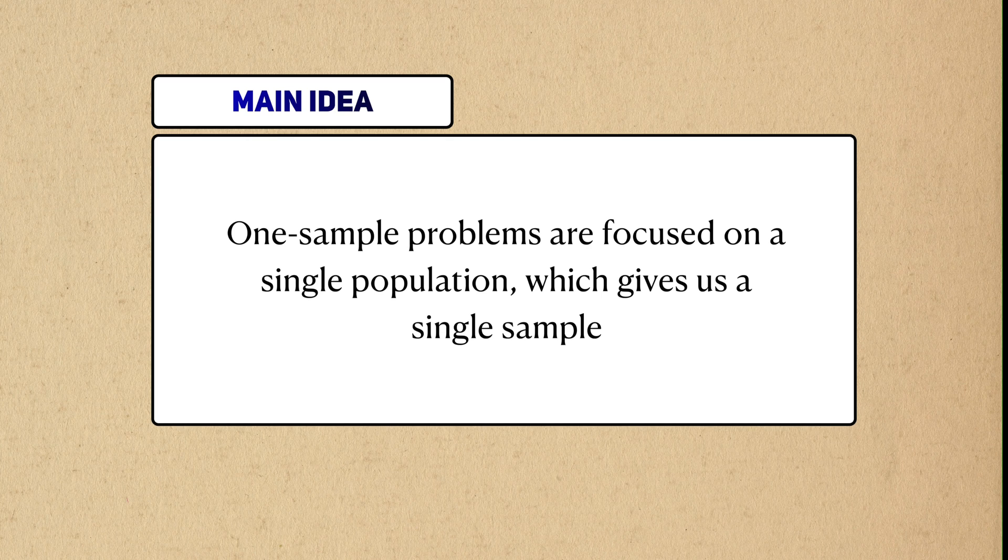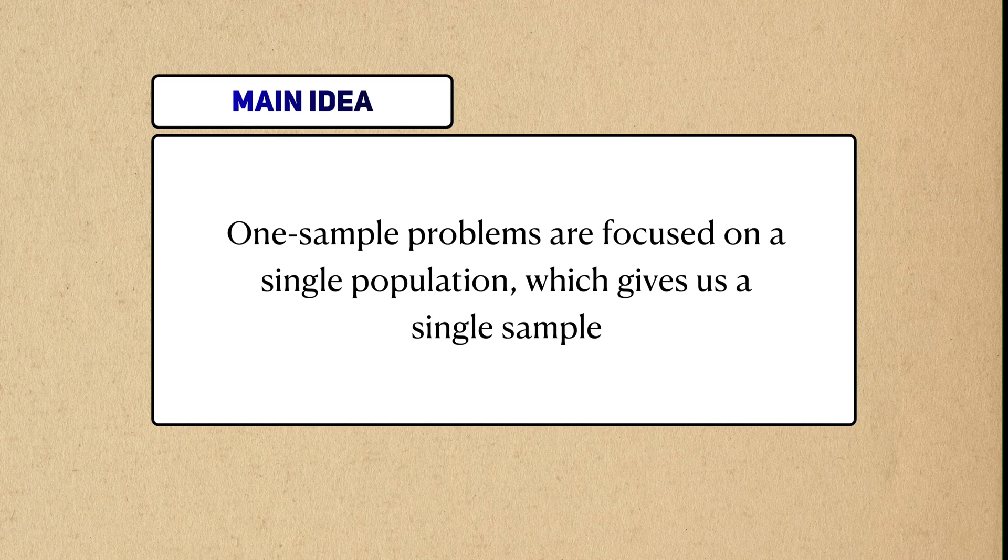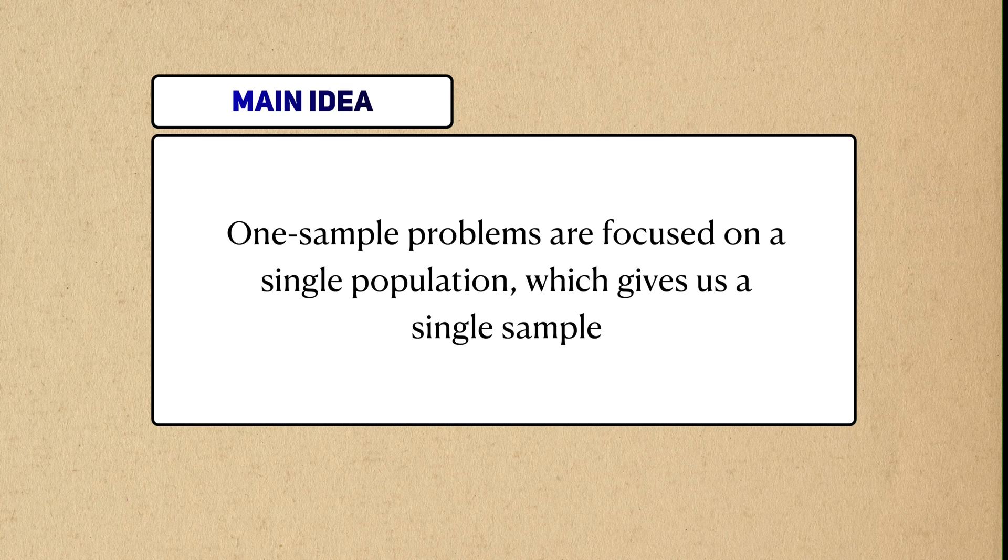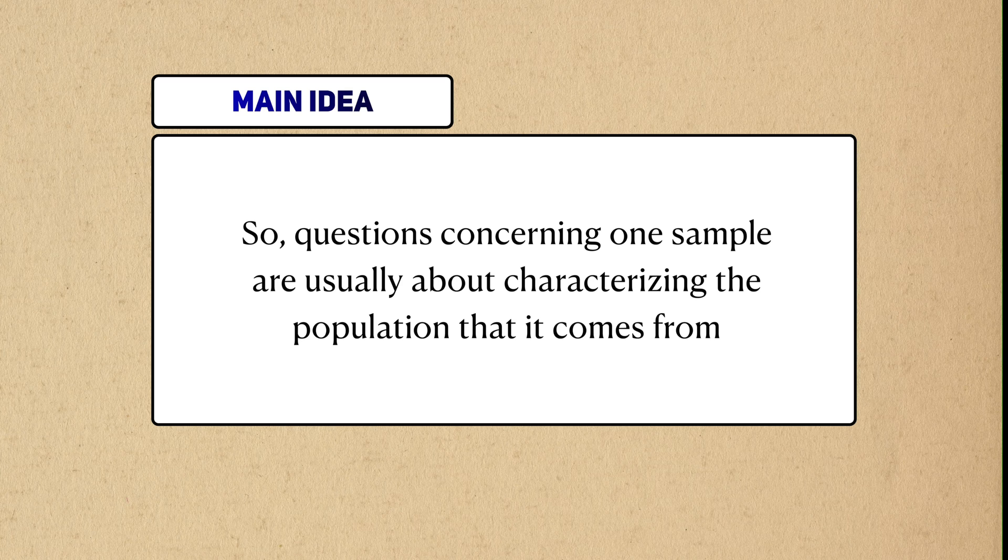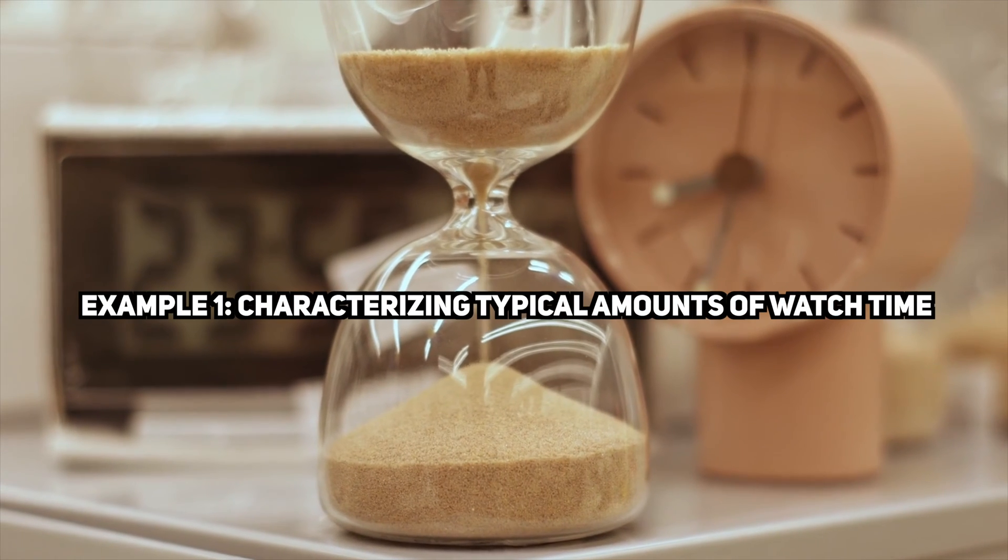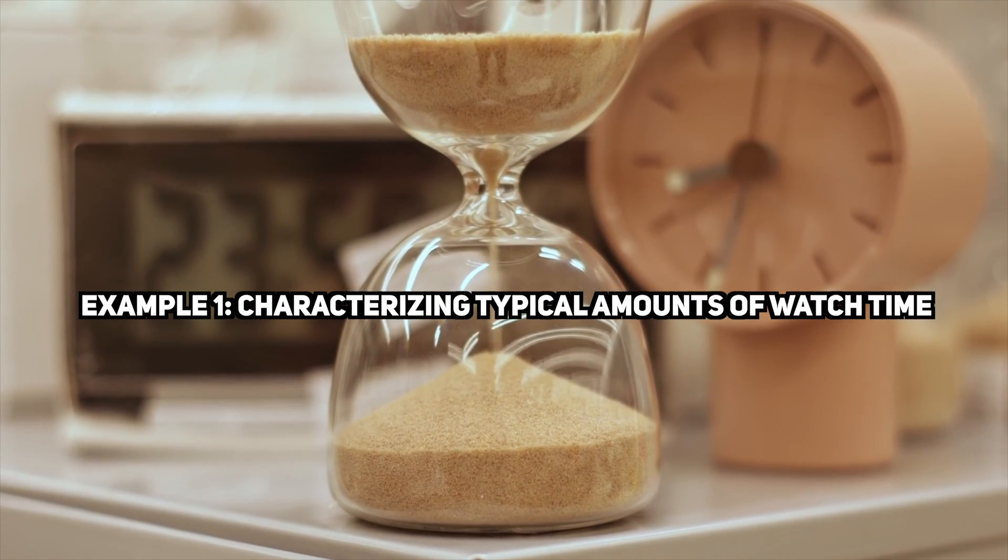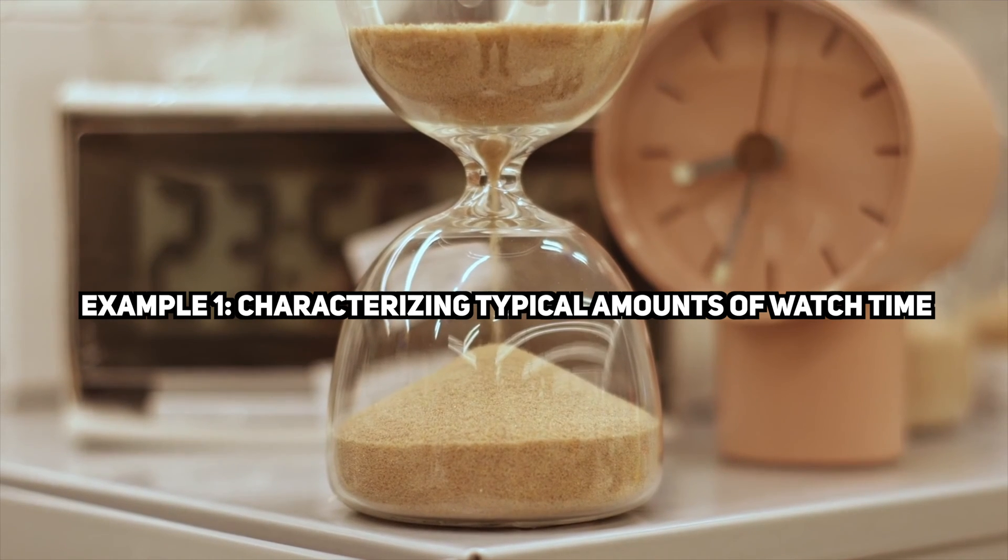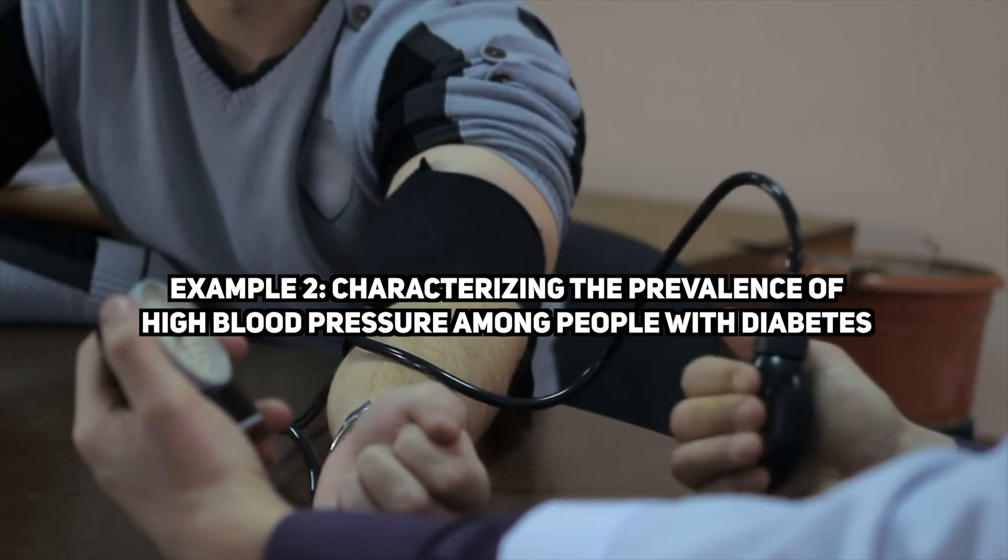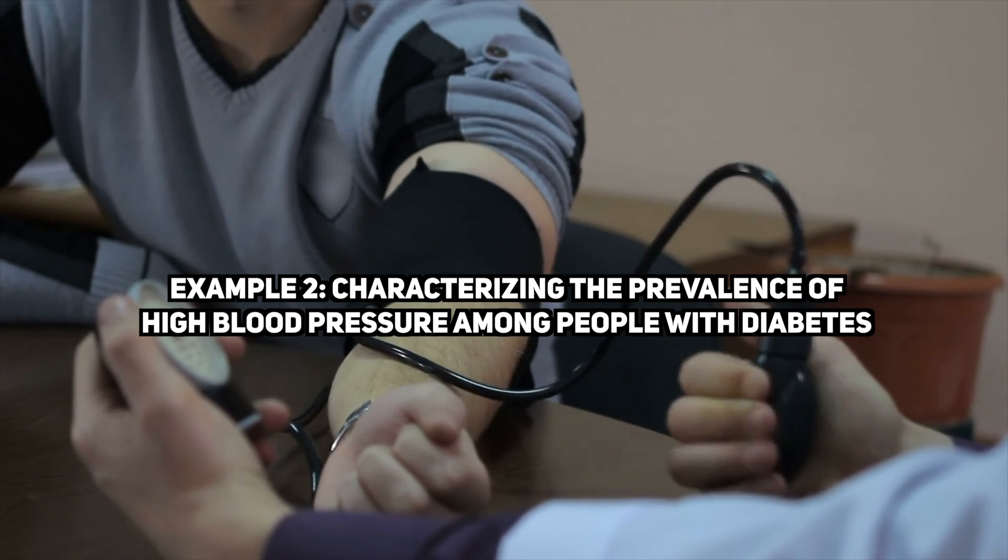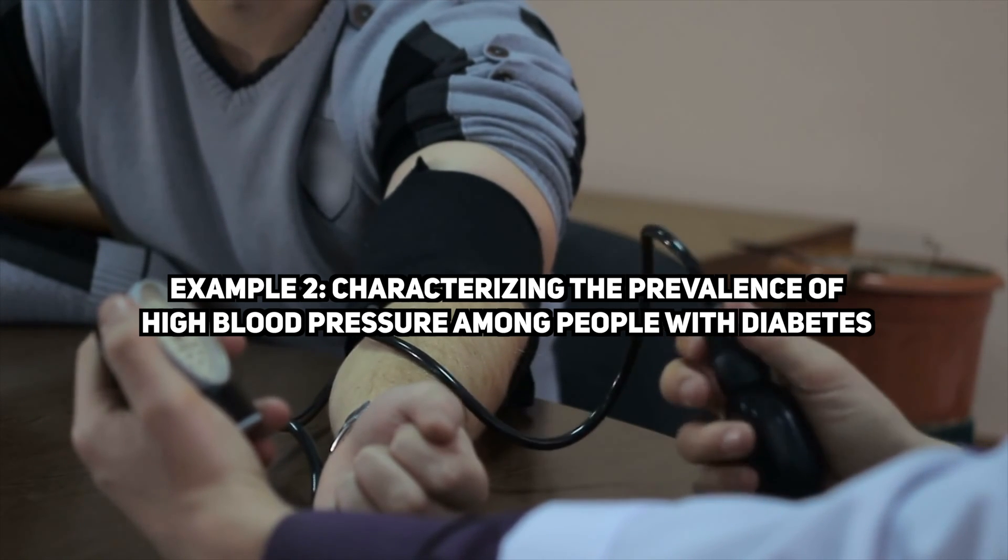Therefore, one-sample problems are problems where we're interested in a single population, and by extension, one sample. With one-sample problems, we're usually trying to research a specific quality about the population. For the YouTube population, we might be interested in the average amount of time they watch YouTube in one day. For the population who has diabetes, we may be interested in the proportion of them who have a particular comorbidity, like obesity or high blood pressure.